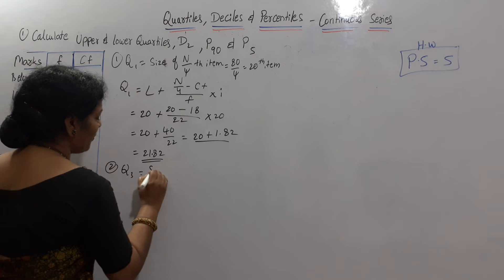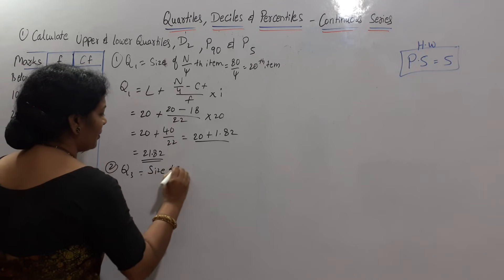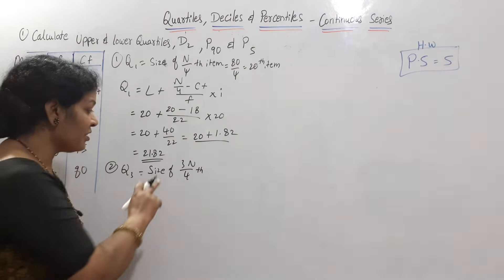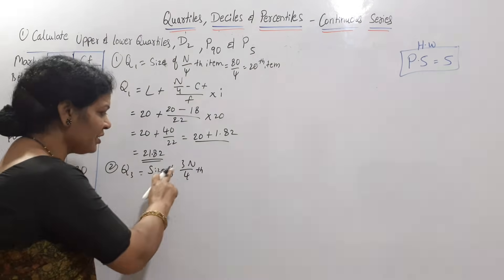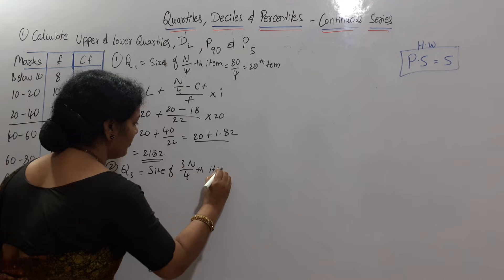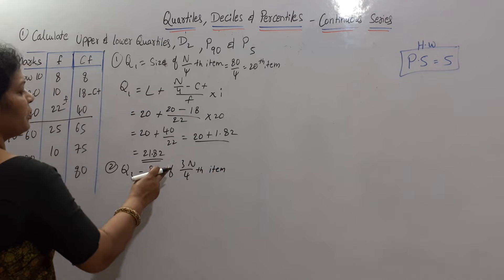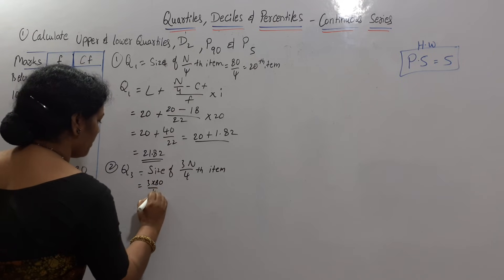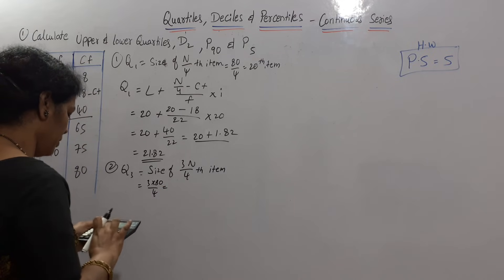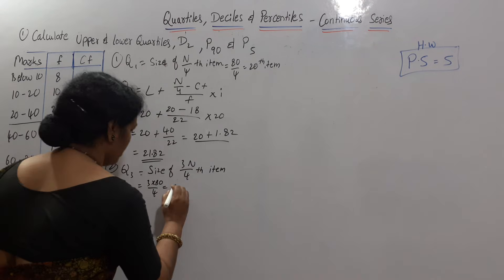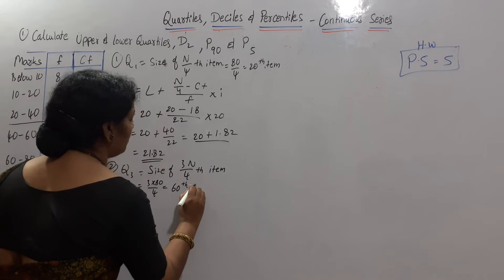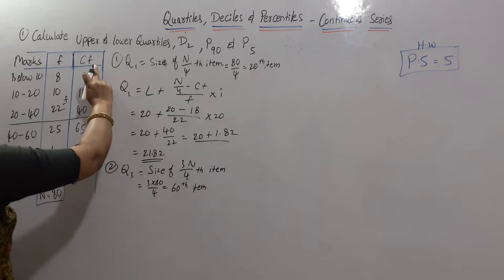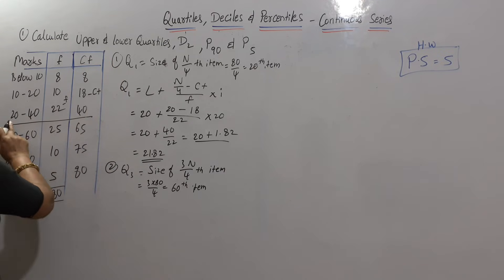Next we'll go for Q3. Q2 would be the median. For Q3, the first formula is size of 3n/4th item. For individual and discrete series it was 3(n+1)/4, but here it is 3n/4. So 3 into 80 by 4 comes to 60 — the 60th item. You can write one sentence: the 20th item lies in CF 40, meaning class interval 20 to 40.